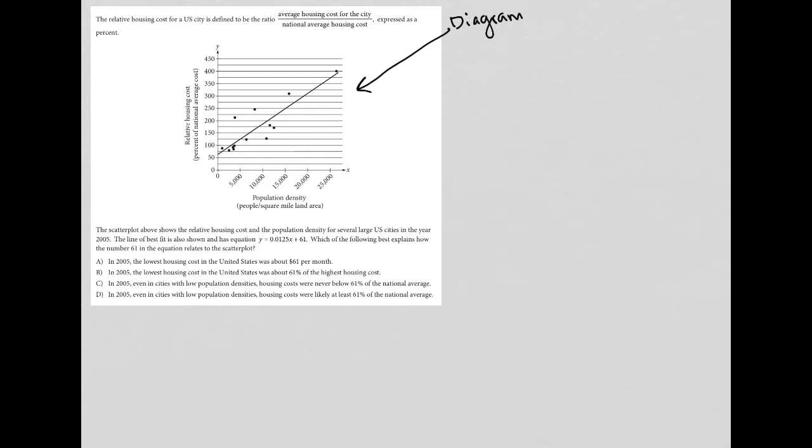There's no title on this graph. It looks like my x-axis is population density, and I'm told how to find that: people per square mile of land area. Then my y-axis is relative housing cost.